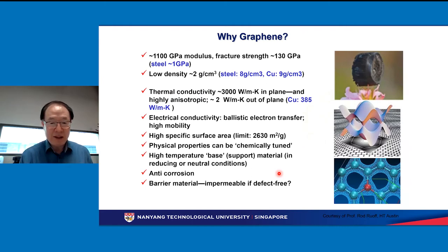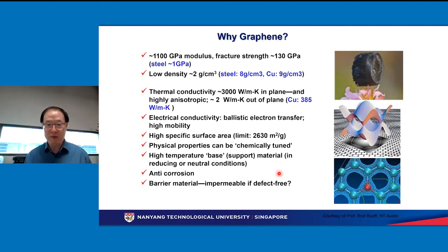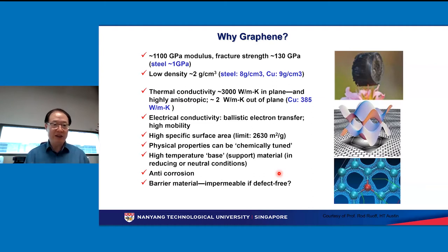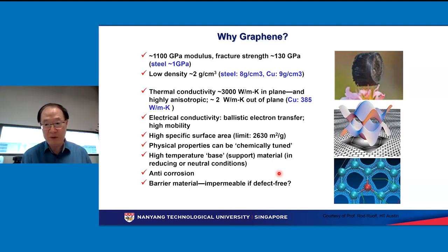We will talk about graphene because my innovation involves graphene and its applications. Graphene as a material has very very good properties, and you don't have to be a material scientist or physicist to understand them. For example, graphene is very strong — in layman's terms, it's 100 to 200 times stronger than steel. It's very light with low density, and it has excellent thermal conductivity, much better than copper.